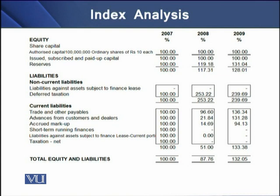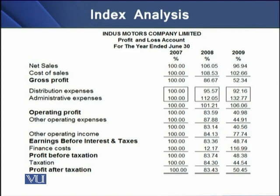Current liabilities in 2008 were 133% compared to 2007 — that is, 133% of 2007. Similarly, if we check the index analysis of the profit and loss account, we can see the following results.